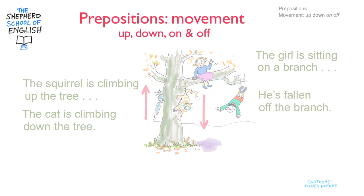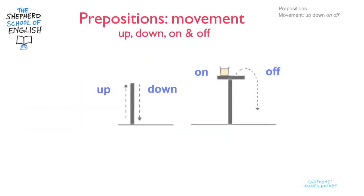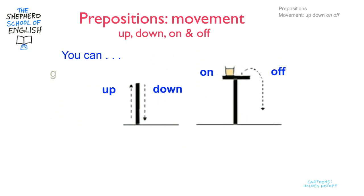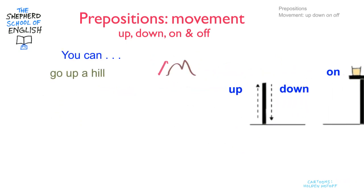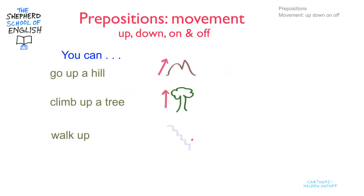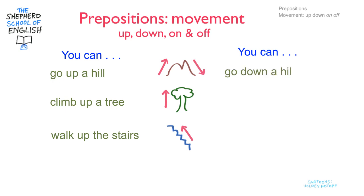Let's go back to my diagrams. First, up. You can go up a hill, climb up a tree, walk up the stairs. Now down — you can go down all those things: down a hill, climb down a tree, walk down the stairs.